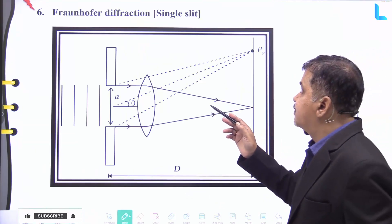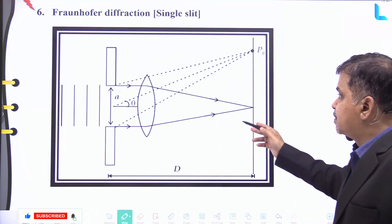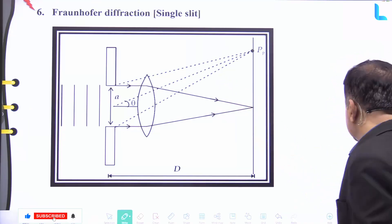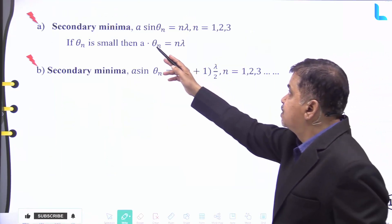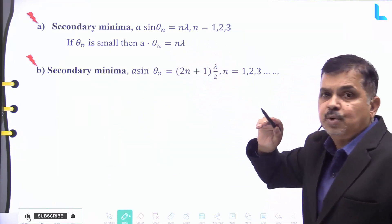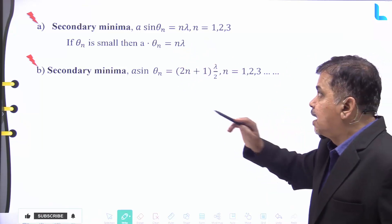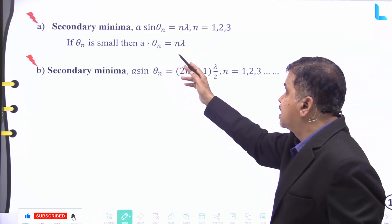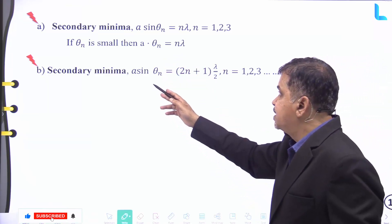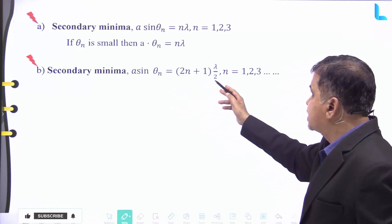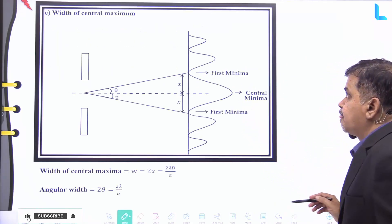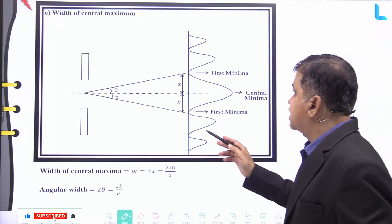For Fraunhofer diffraction at a single slit, the secondary minima are given by: a sin θ_n = nλ, where n = 1, 2, 3, and so on. If θ_n is small, then a·θ_n = nλ. For secondary maxima: a sin θ_n = (2n + 1)λ/2, where n = 1, 2, 3, and so on.